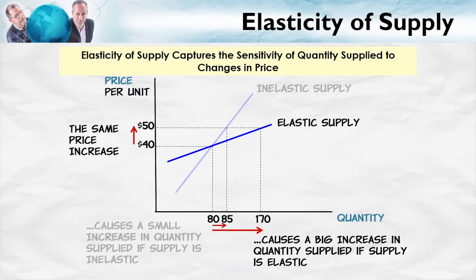As with demand curves, elasticity is not the same thing as slope. Nevertheless, when you have two curves which go through a common point, the one which is flatter is more elastic at any given quantity. The one which is steeper is more inelastic. So we can always look at two curves and say this curve is more elastic than the steeper curve.